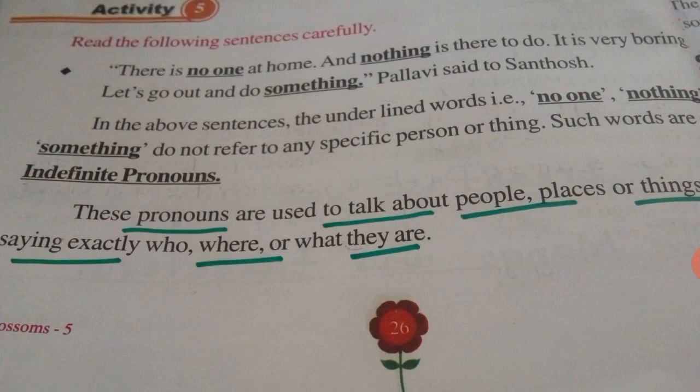Indefinite pronouns means we are not mentioning anyone's name. 'No one at home' — she didn't mention father's name or mother's name. 'Nothing' — if we don't have any work, we say 'we have nothing to do.' 'Something' — these words don't refer to any particular person or anything. These pronouns are used to talk about people, places, or things without saying exactly who, where, and what they are.